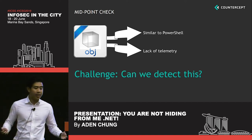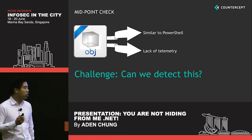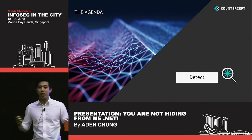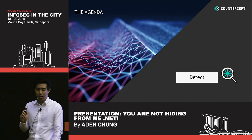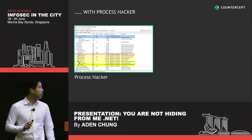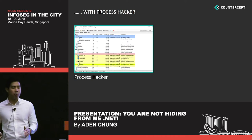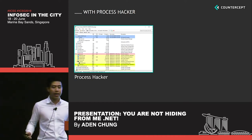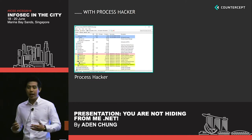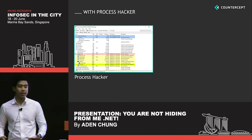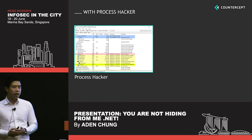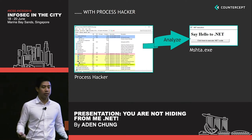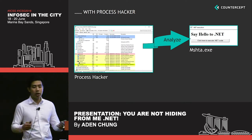Now I'm going to move on to the second agenda item: how do we actually do the detection portion itself? I'm going to do some informal initial triage first with Process Hacker. For those unaware, Process Hacker is a tool that allows you to analyze process properties such as performance metrics and module loads. I'm going to use it to analyze the MSHTA process that was used to run the .NET HTA file.